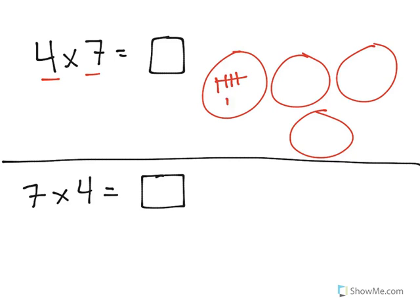Let's go ahead and draw that out. [Counting and drawing: 5, 6, 7, 8, 9, 10, 11, 12, 13, 14, 15, 16, 17, 18, 19, 20, 21, 22, 23, 24, 25, 26, 27, 28.] 4 times 7 is equal to 28.